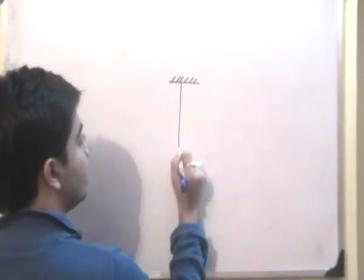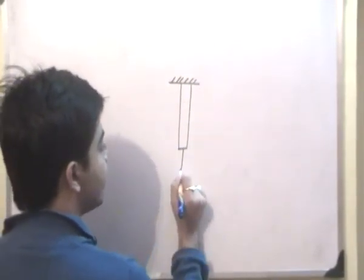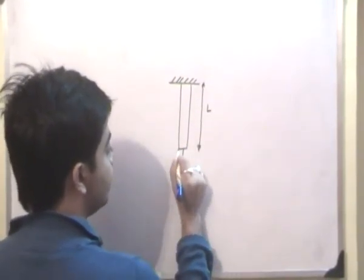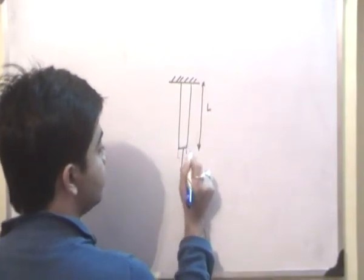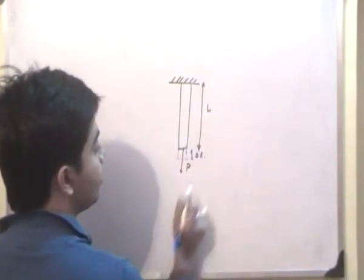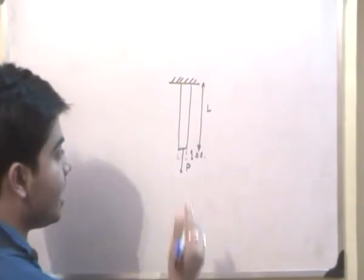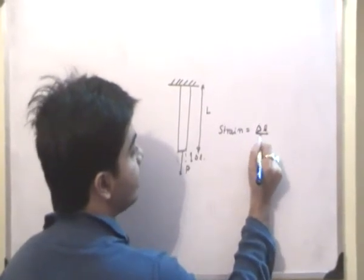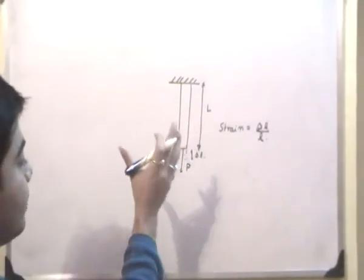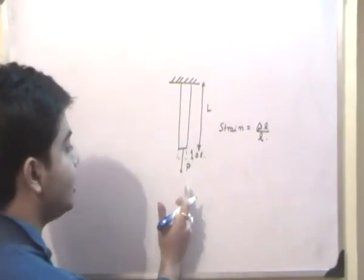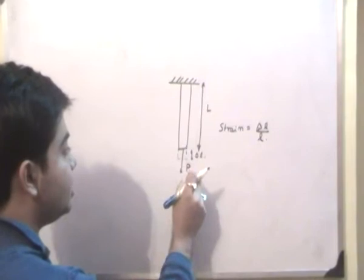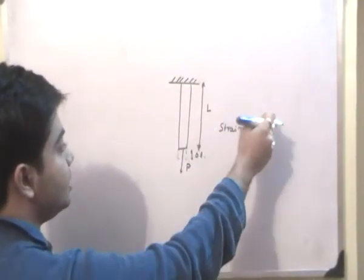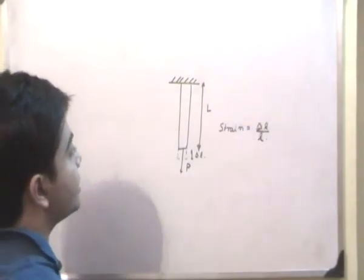If this is a hanger and this is a rod, and I pull this rod by a force P, and suppose this is my length L, then this rod will elongate and the change in length will be equal to δL. Then strain will be equal to δL/L. This is the concept of normal strain. The force P acts normal to the cross-sectional area, and strain is the change in length, δL, divided by the original length L.